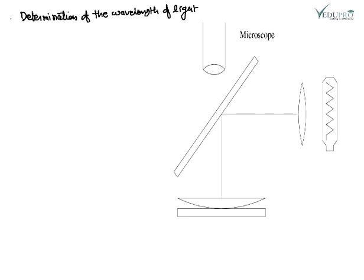Our next heading is determination of wavelength of light using Newton's rings. This is an application of Newton's rings. With the help of the Newton's ring apparatus, we can easily determine the wavelength of light.